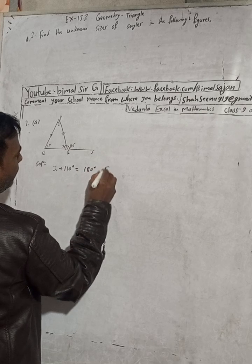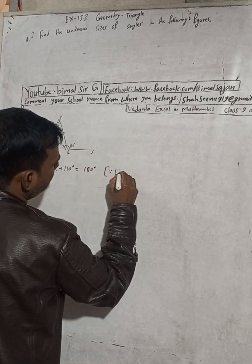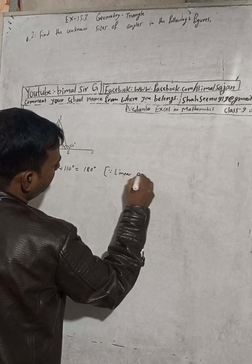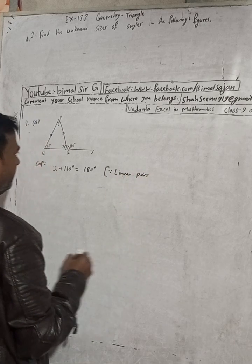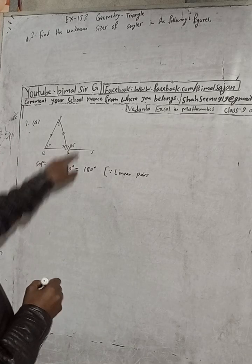This is called linear pairs. Linear pairs are supplementary, that is 180 degrees.